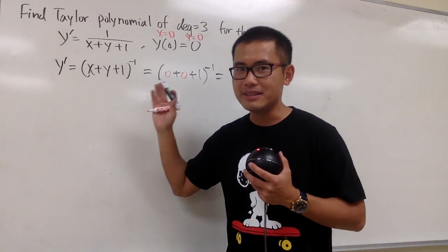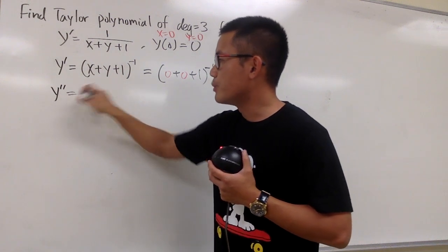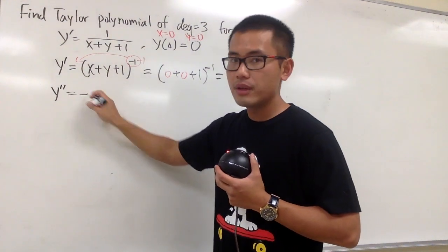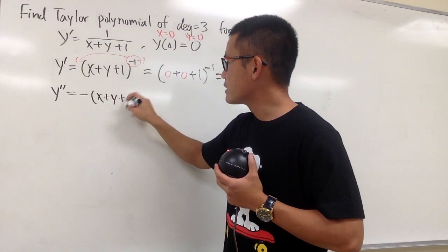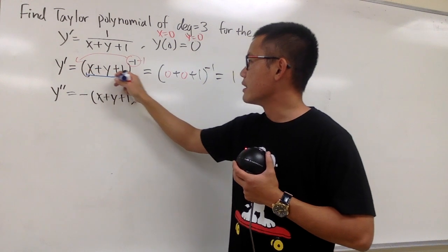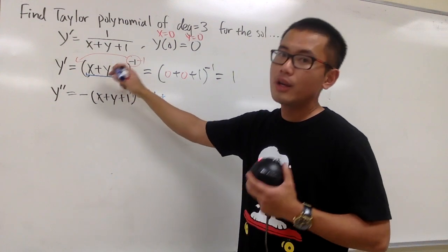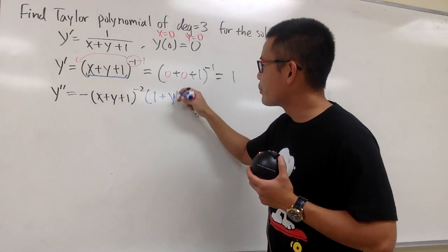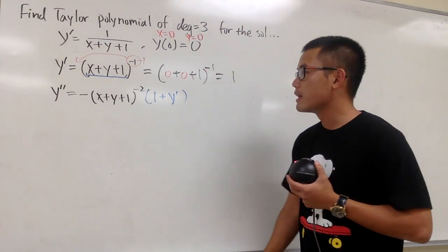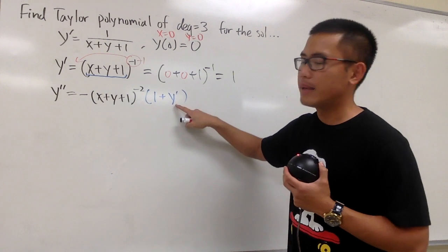Next, we need to get the second derivative — differentiate the first to get the second. So y double prime: bring the power to the front, giving negative 1, so we have negative (x + y + 1) to the negative 2 power. We multiply by the derivative of the inside: derivative of x is 1, and derivative of y is y prime, and derivative of 1 is 0. So we'll plug in 0 for x, 0 for y, and 1 for y prime.